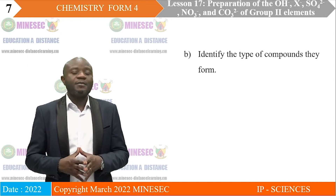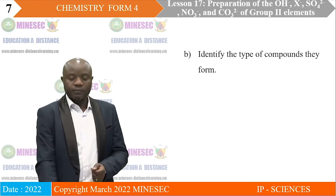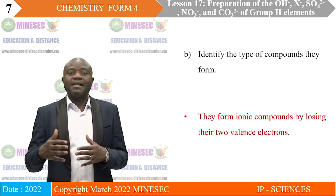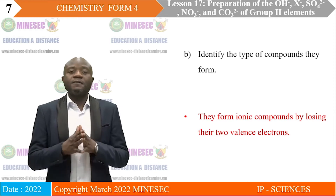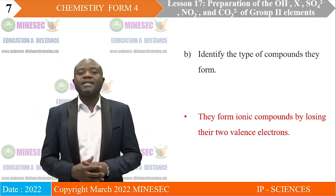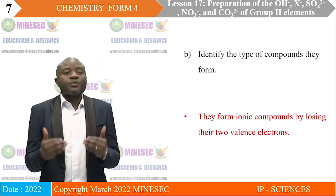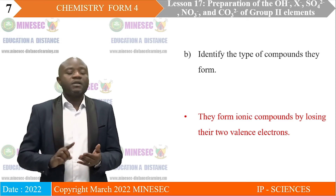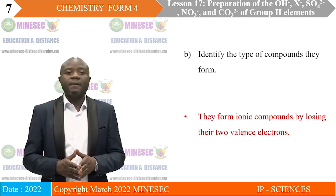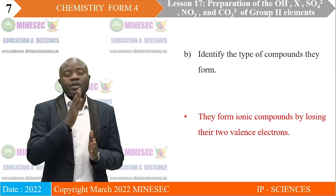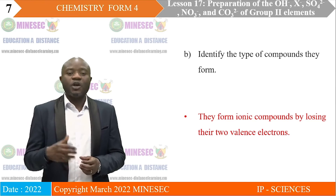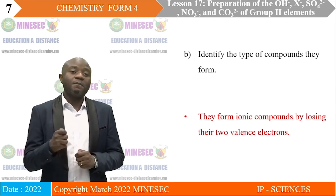B. Identify the type of compounds they form. Group 2 elements, as their name implies — alkaline earth metals — are metals, so they form ionic compounds, and they do so by losing electrons to non-metallic elements. For a Group 2 element to form a compound, the two valence electrons on its outer shell are completely transferred to a non-metallic element, resulting in the formation of an ion with a charge of plus 2, while the non-metal that gains the electrons forms an ion with a charge of minus 2.